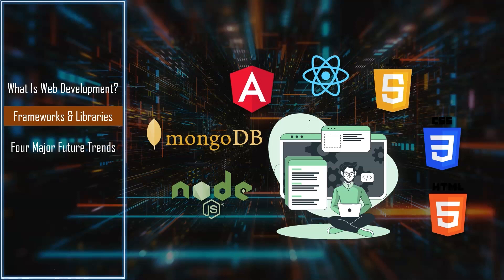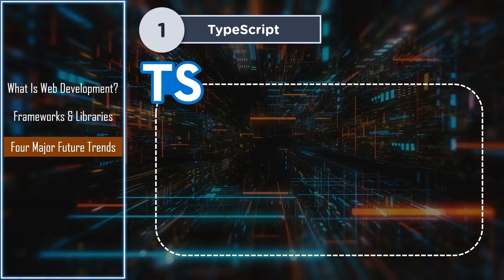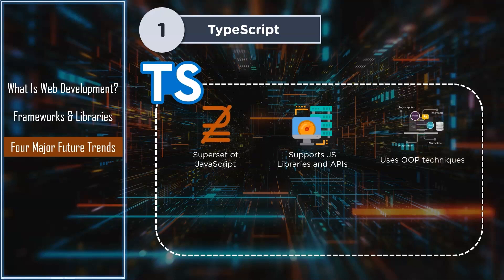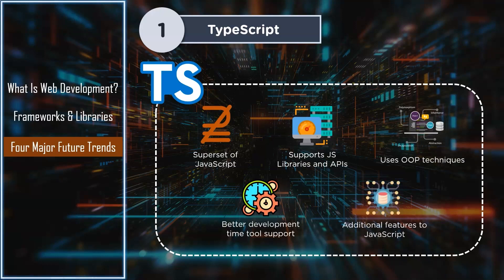According to experts there are four major future trends in web development. First up is TypeScript. TypeScript is a superset of JavaScript and is an object-oriented programming language — in simple terms, it is just JavaScript with other impressive additional features. TypeScript supports all JavaScript libraries and frameworks. With an increase in code complexity, JavaScript had to fulfill the requirements of OOP, and that led to the introduction of TypeScript. TypeScript helps with quicker code development, thus improving performance.